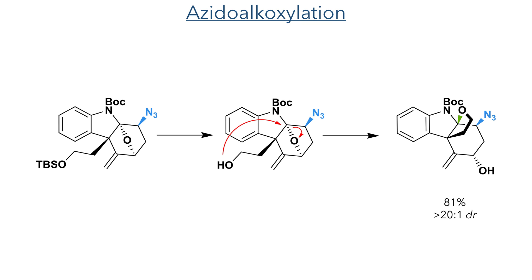In the optimised reaction, the conditions allowed for deprotection of the TBS group, generating a free primary hydroxyl group on the face of the molecule anti to the bridging ether. This undergoes an intramolecular SN2 reaction to produce the secondary alcohol together with formation of a new five-membered ring. Overall this process produced the product in an 81% yield with a greater than 20:1 dr.